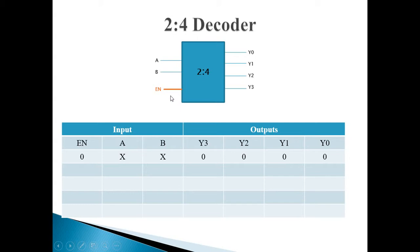For some decoder ICs, this signal is active low. So in that case, we need to give enable as 0. But here, for the generalized concept of decoder, we will consider that the enable signal is active high.